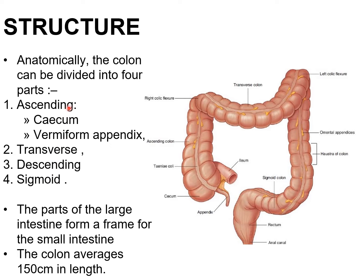The ascending colon again consists of the cecum and vermiform appendix. These parts of the large intestine form a frame for the small intestine. The entire small intestine is placed within the space of this frame.